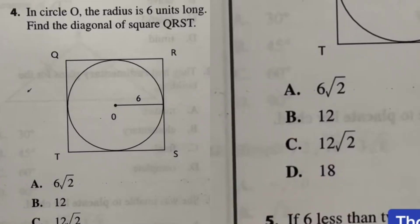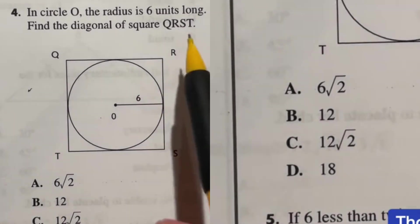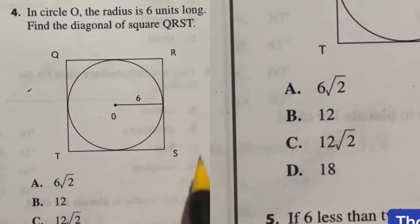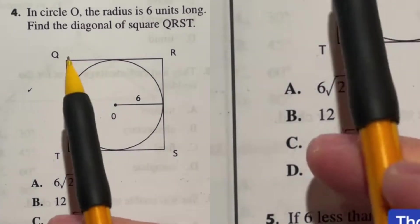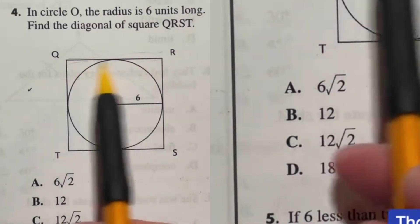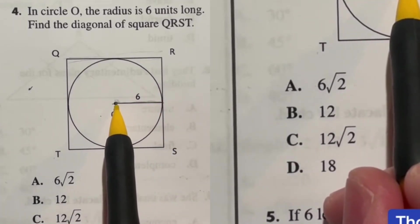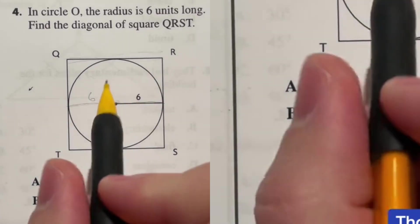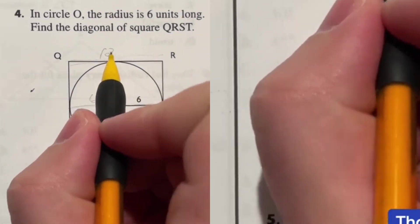Number 4 is fairly easy here. Let's break down a few things. It says, in circle O, the radius is 6 units long. Find the diagonal of square QRST. So first and foremost, in order to find the diagonal, we're going to need a side length here. Well, it gives us the radius right here, but if this is the radius, then that means the radius goes this way for the same amount. Meaning that our side length here is just 6 plus that 6, giving us 12.